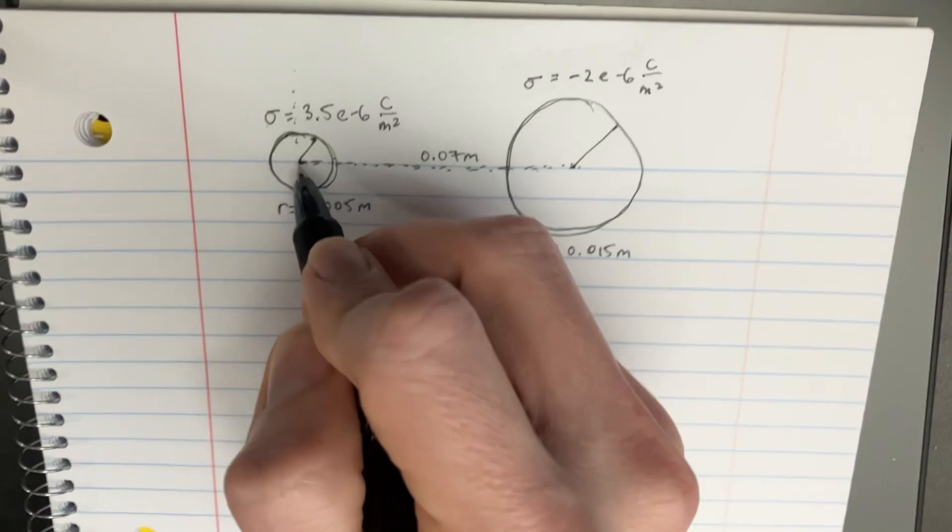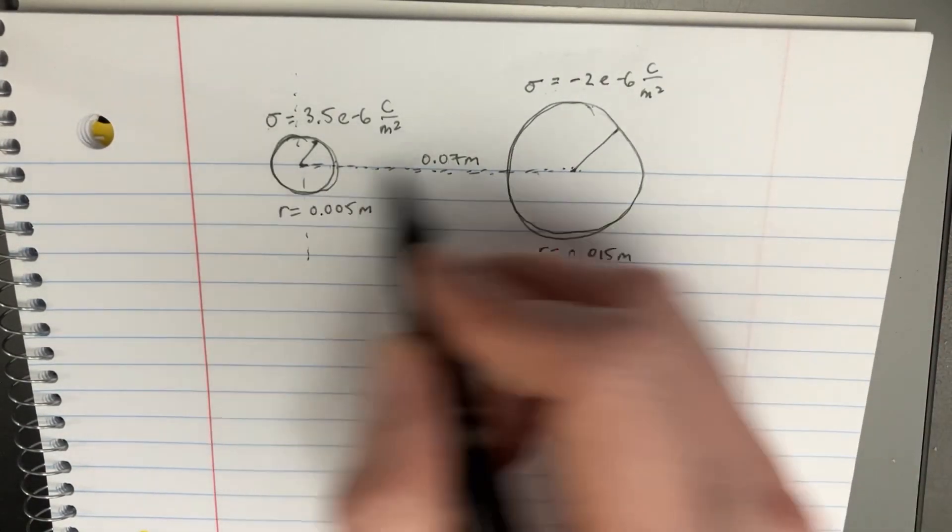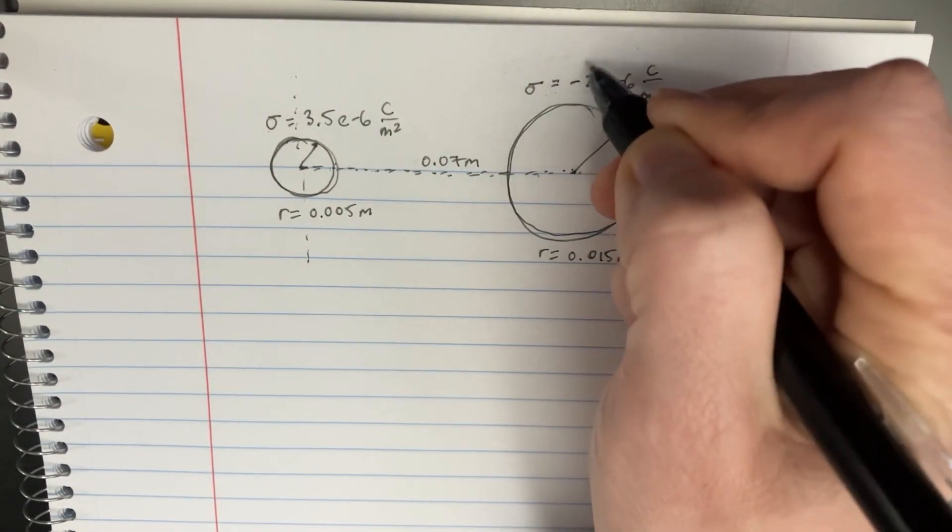And we're asked to figure out where is the electric field equal to zero along this x-axis. So what that's really trying to say is, okay, well...